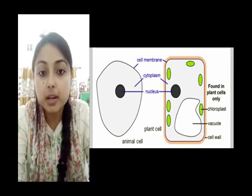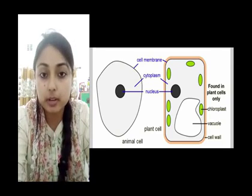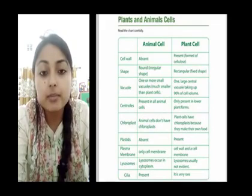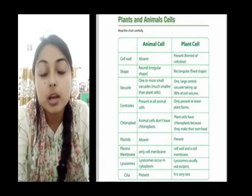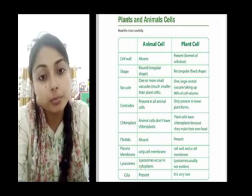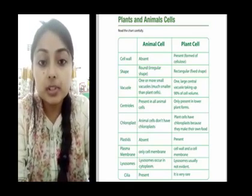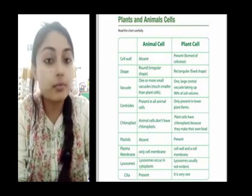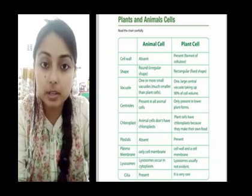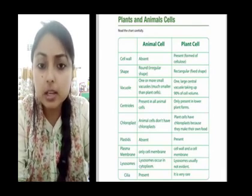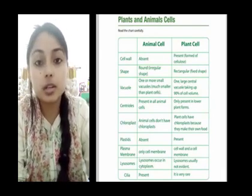Plant cells are usually larger with a distinct outline. They have a defined cell wall made up of cellulose. The cytoplasm is not so dense. Vacuoles are prominent and may be one or more in number. They usually contain plastids. Animal cells are usually smaller with less distinct boundaries. They have no cell wall. The cytoplasm is dense with more granules. Vacuoles, if any, are small and temporary, and animal cells do not contain plastids.